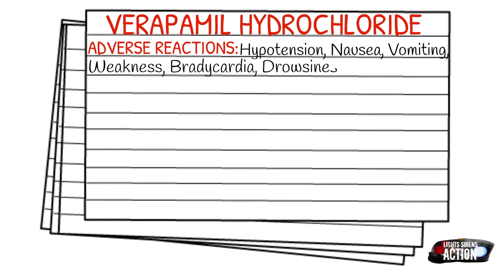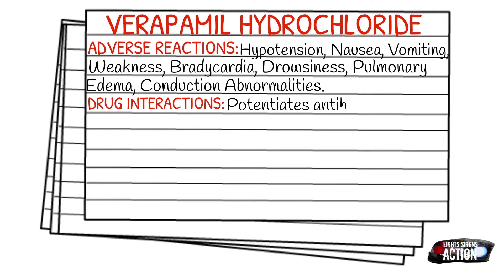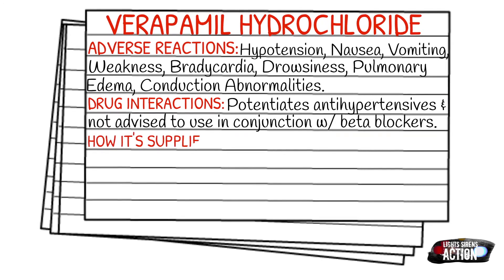Your drug interactions are that it potentiates antihypertensives and it is not advised to use in conjunction with beta blockers. The most common way you'll see it supplied is 2.5 mg per milliliter.